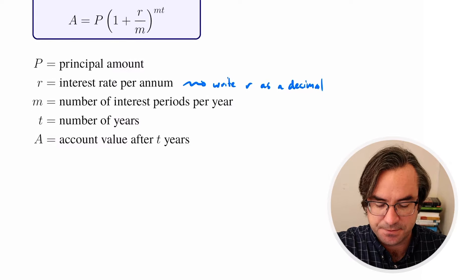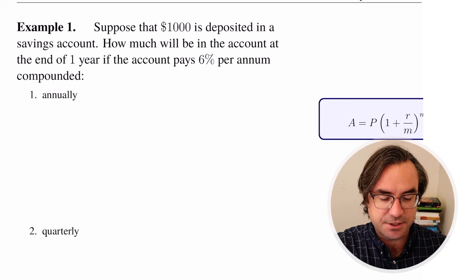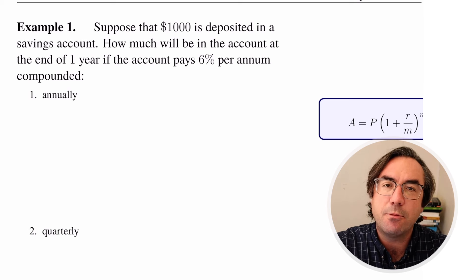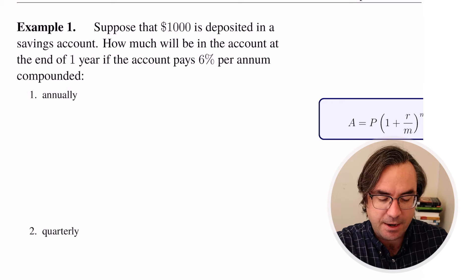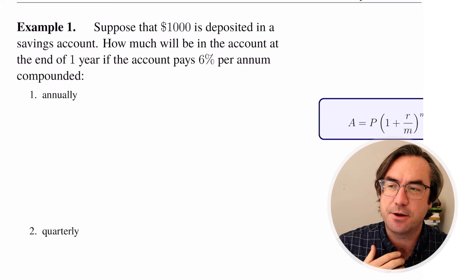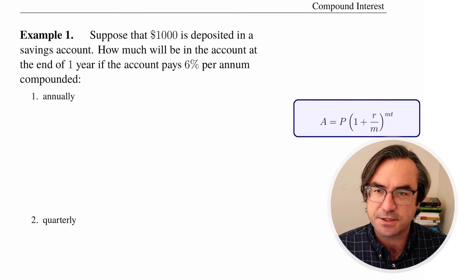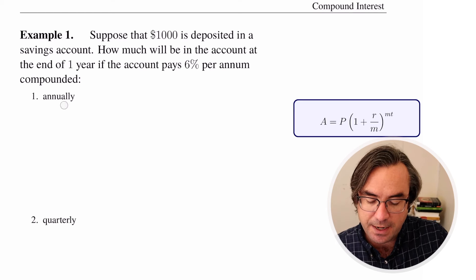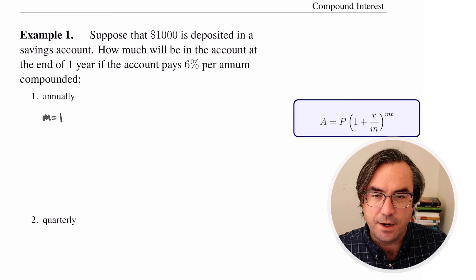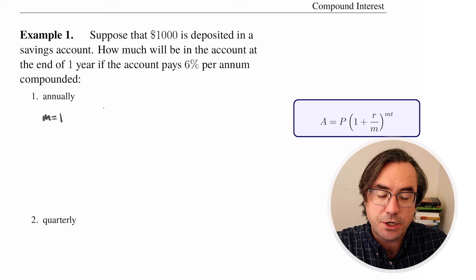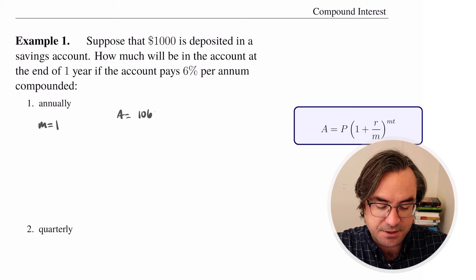Let's formalize this with examples. We're still depositing $1,000, we're still earning 6% per annum, and we want to know the balance after one year. First, compounded annually — this is the case we already looked at. This is an m value of 1. And after one year, we saw that our account balance was $1,060.